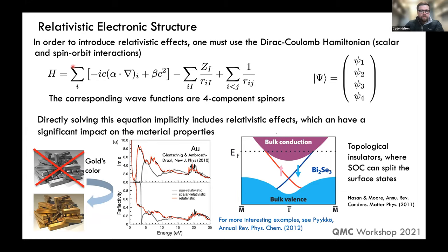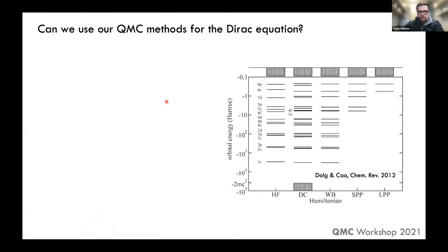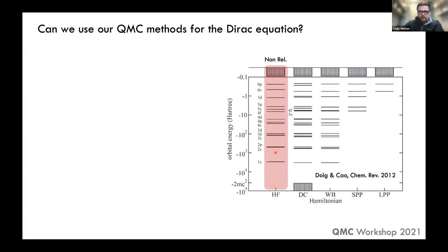We know we can include relativity by solving the Dirac equation. Could we actually use our QMC methods for this? To discuss this, I want to focus on single-particle states — the eigenstates of the Hamiltonian — at different levels of approximation to the Dirac equation. In the non-relativistic case, these are the familiar energy levels: 1s, 2s, 2p, etc., for something like lead or another heavy element.